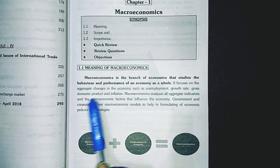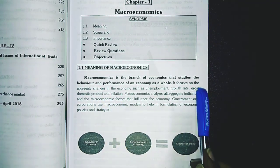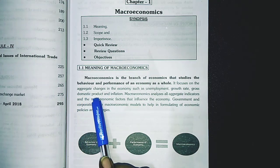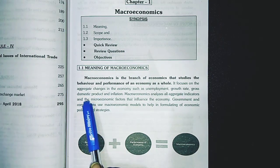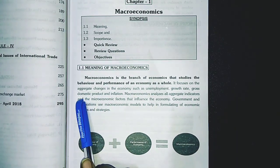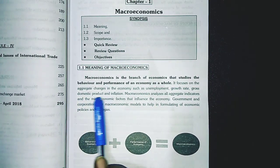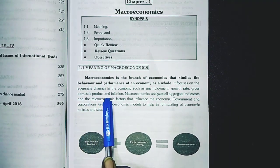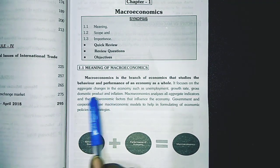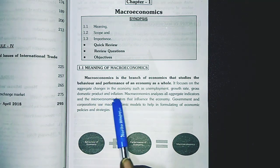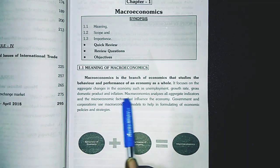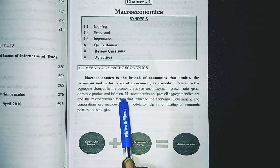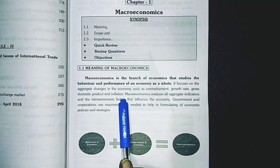The gross domestic product means the total value of goods produced and services provided in a country during one year. And inflation means the rise in the prices of commodities.